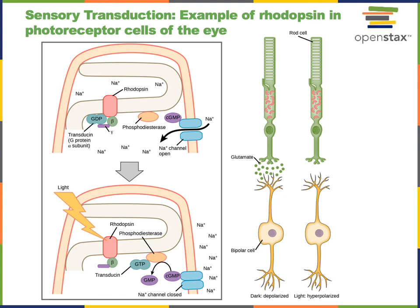Cyclic GMP, or cyclic guanosine monophosphate, is a second messenger molecule inside photoreceptors that has the function of stimulating the opening of a cyclic nucleotide gated sodium ion channel. As the cyclic GMP concentration of the cytosol decreases in response to light, the sodium ion channel will close, leading to hyperpolarization of the photoreceptor cell and decreased release of the neurotransmitter glutamate.